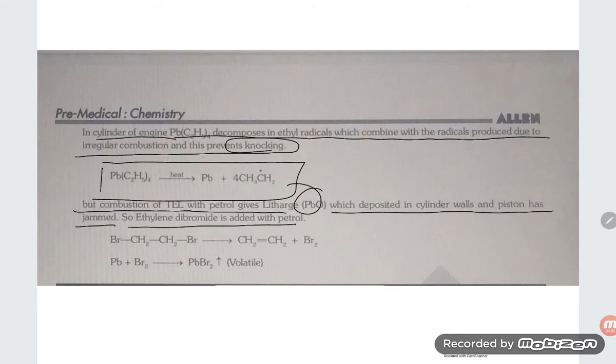...dibromide is added with petrol so that the formed compound will become volatile. Ethylene dibromide will give ethylene plus bromine, and Pb plus Br2 will form PbBr2...